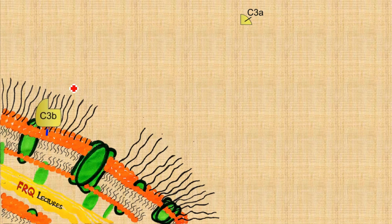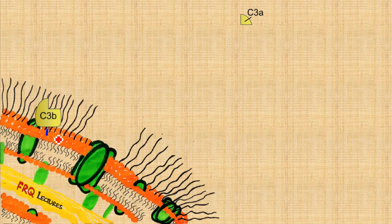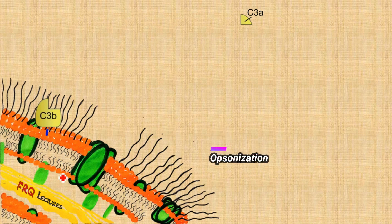C3b will bind itself via a bond to the surface of a pathogen — for example, a bacterium with a lipid bilayer surface. C3b attaches to this surface so that in the future it can either create a pore within the bacterial membrane or pursue another option, which is opsonization.